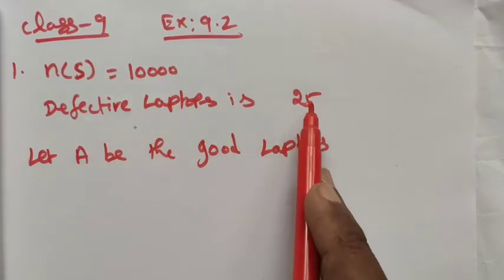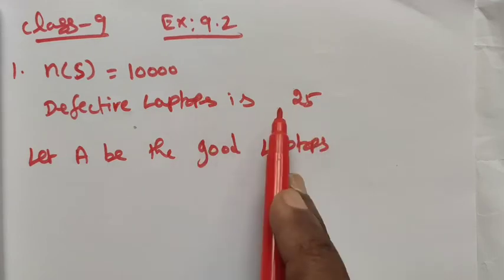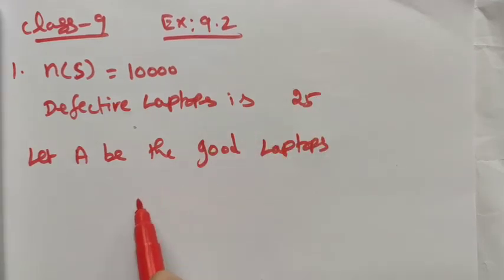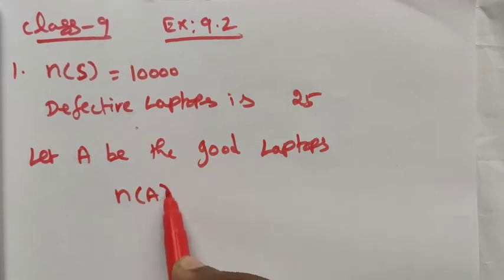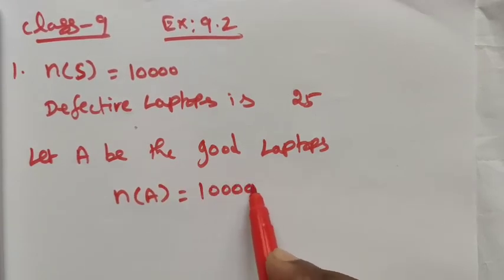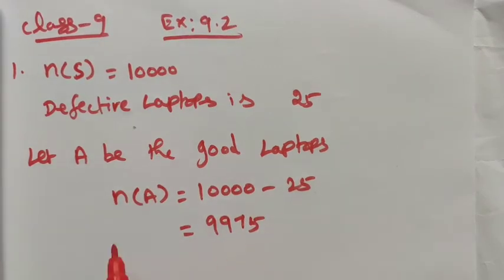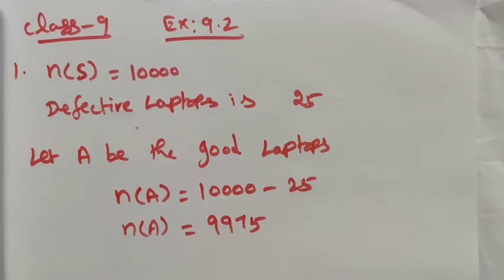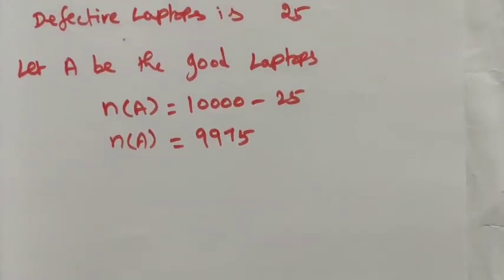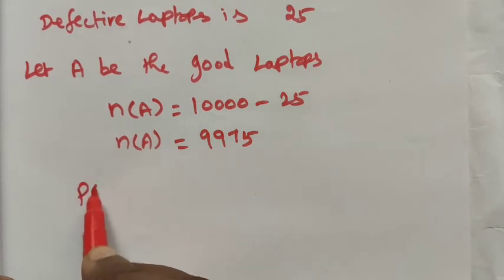We get the good one, so that is n(A) equals 10,000 minus 25, which equals 9,975. So good ones, we have 9,975. Now we want to find the probability.